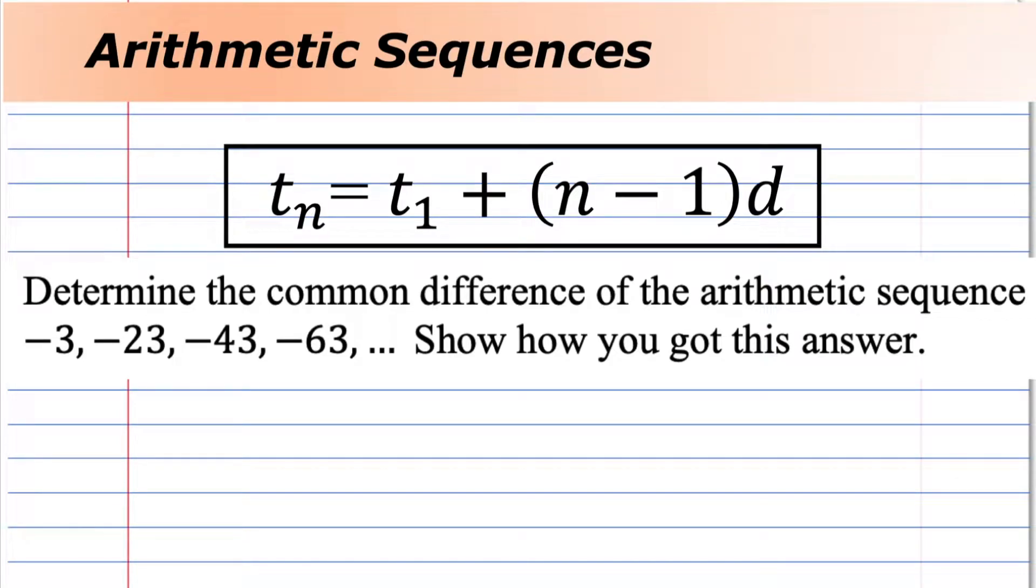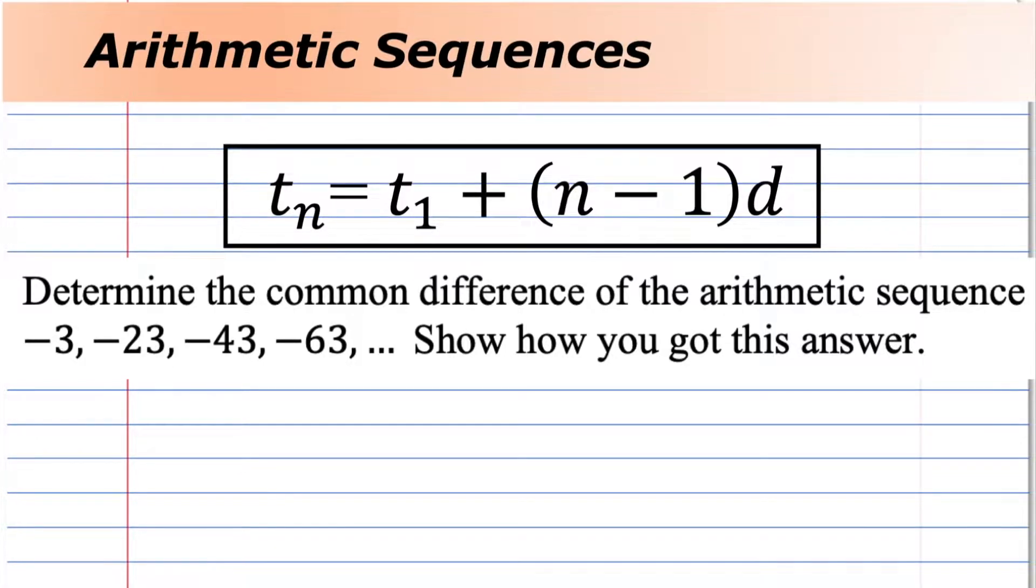t of n equals t of 1 plus n minus 1 times d. This is the arithmetic sequence formula, and it's used when you're given values for three of the variables and you're asked to find the fourth. Let's go through a few examples.